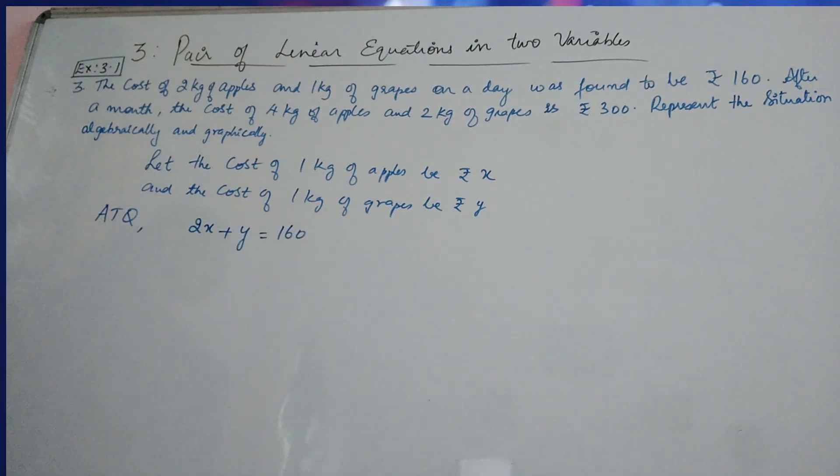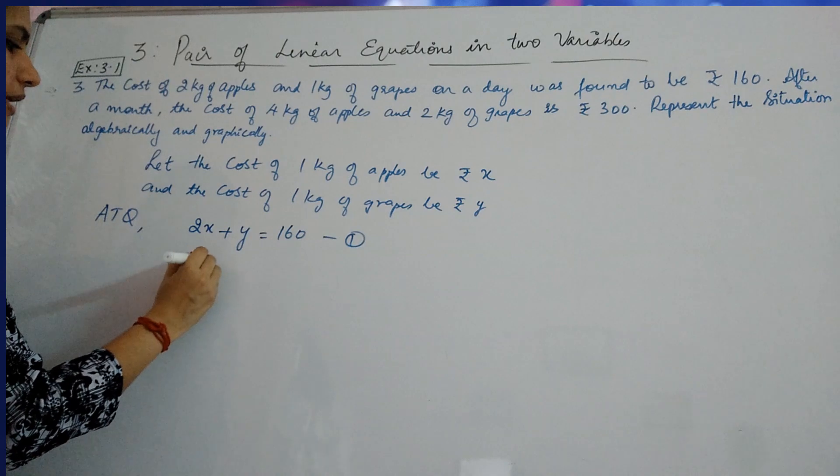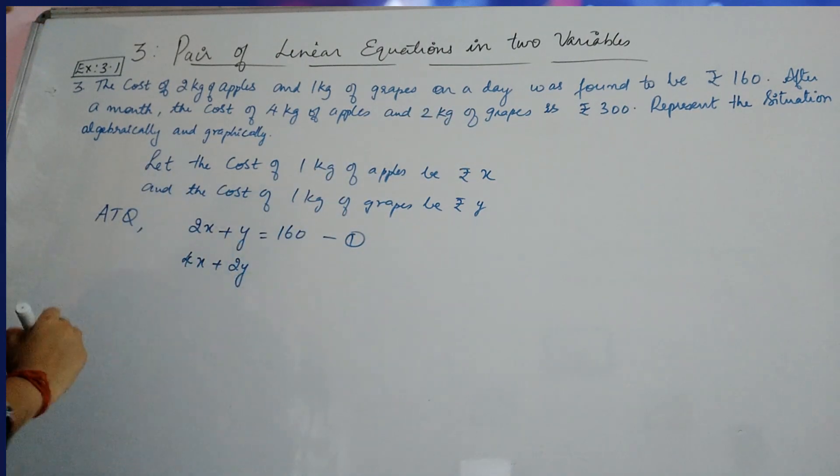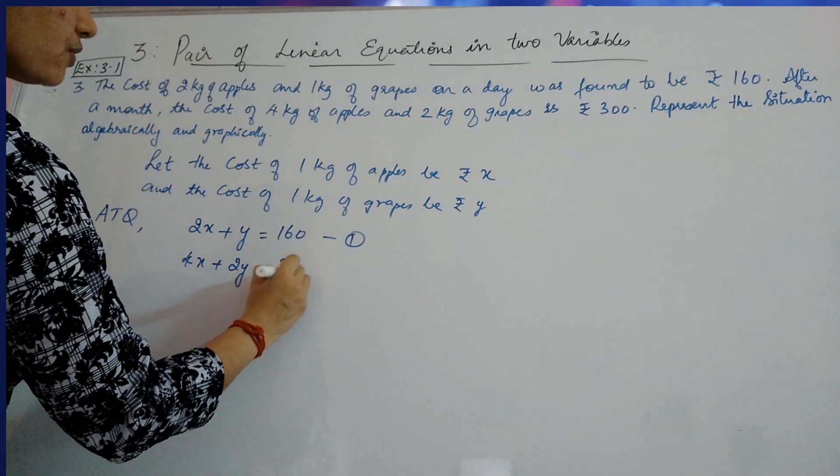Now, this can be taken as your first equation. This equation of a month. Now, the second sentence is, after a month, the cost of 4 kg of apples, so it will become 4x, plus 2 kg of grapes, which will become 2Y, is giving you 300.